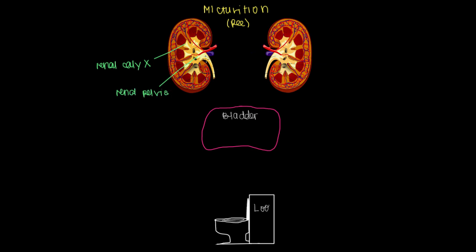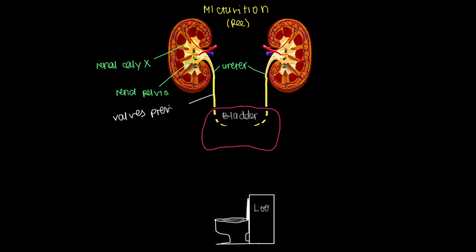The renal pelvis leaves the kidney through a tube called the ureter — and we've got two ureters. The ureter conducts urine inferiorly, towards our feet, by connecting into the bladder. The ureters attach to the back, or posterior aspect, of the bladder. Our ureters are like a one-way street because they have valves that prevent backflow of urine upwards, meaning urine only flows down towards your feet.